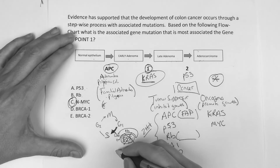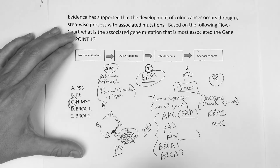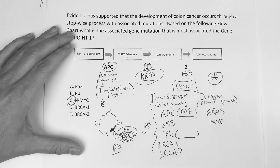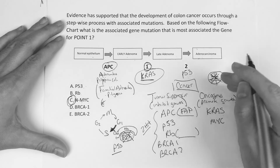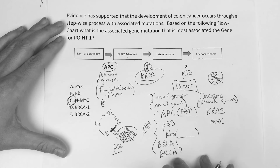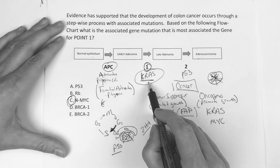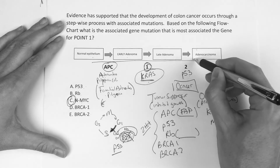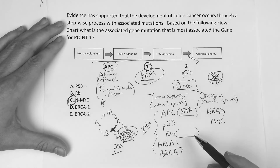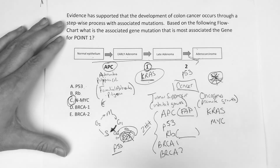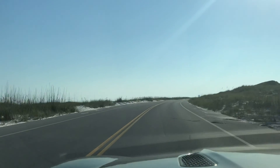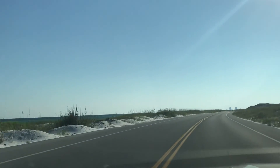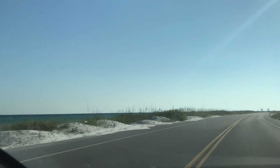And this is where P53 kind of hangs out as well. So the take-home point: memorize these genes, associate something with each one — retinoblastoma with RB, familial adenomatous polyposis with APC, and so on. The progression APC → KRAS → P53 is a very common question on Qbanks. Try to think one step ahead — see if you can beat them to the punch. Hope it was helpful. See you next time.